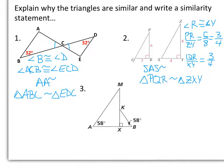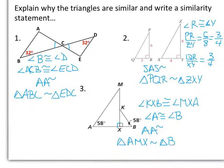And for our third one, we know that angle KXB is 90 degrees, which also makes angle MXA 90 degrees. So angle KXB is congruent to angle MXA. And we are given that angle A is congruent to angle B. So these two triangles are similar by the angle-angle similarity. Triangle AMX is similar to triangle BKX.